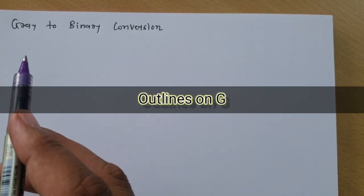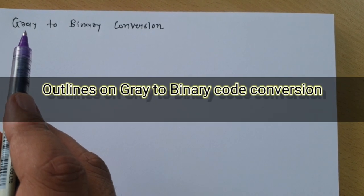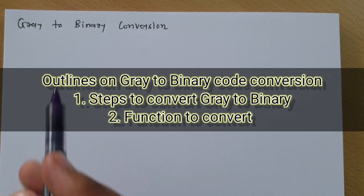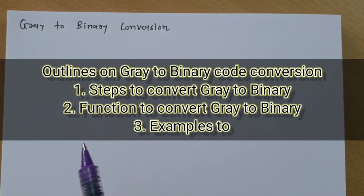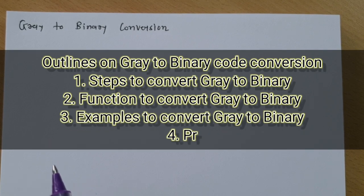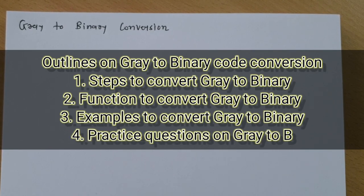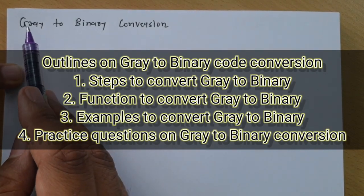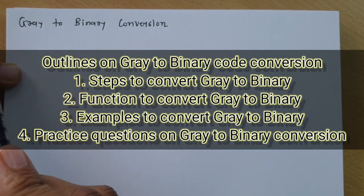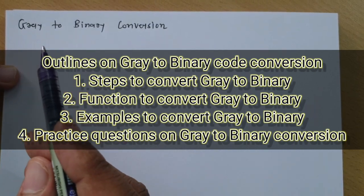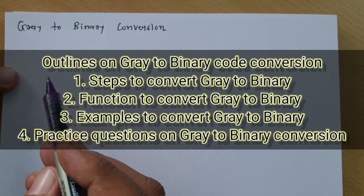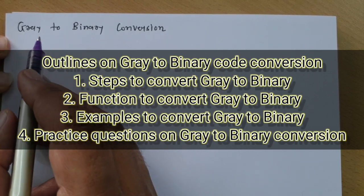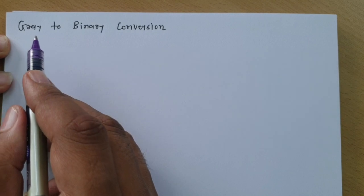In this session, I'll first explain the basic steps required for conversion of gray into binary. After that, I'll explain gray to binary conversion with functional representation so that one can be able to connect a circuit if required. Then I'll explain some examples where we will solve problems to translate gray code into binary code. At the end, I'll give some exercise questions — write your answers in the comments. Let us begin with the first agenda: steps required to translate gray code into binary code.